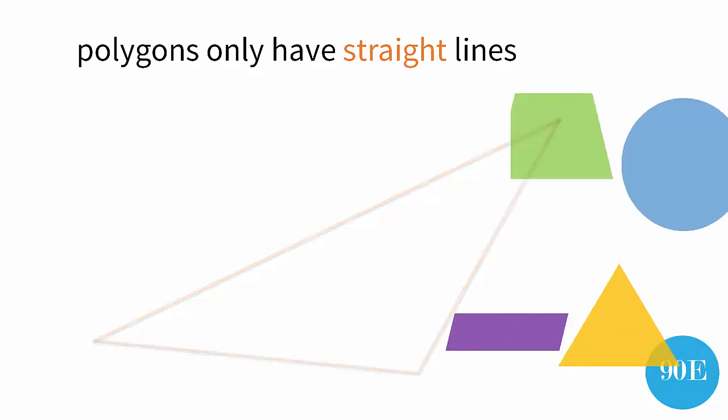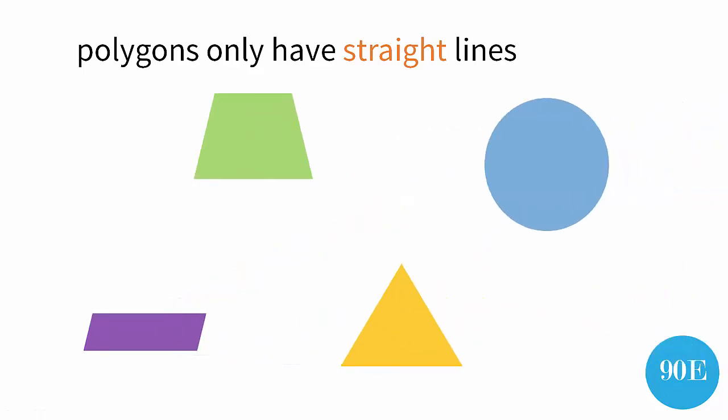Knowing this, have a look at these shapes and decide for yourself which ones of them are a polygon. Well, all of them are except for this blue circle.